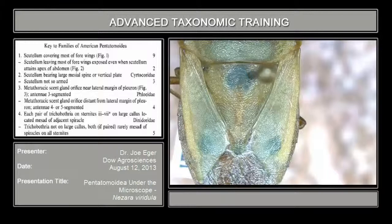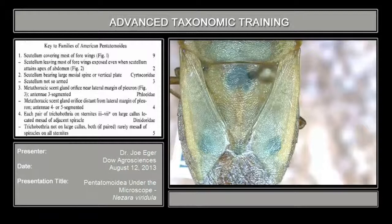Hi, I'm Joe Eager with Dow AgriSciences. The next bug we're going to key is Nezara viridula. This bug had the most interceptions on the PPQ database query that I received — something like 1,100 interceptions. It's a global pest, so you would expect it to be fairly common in interceptions.